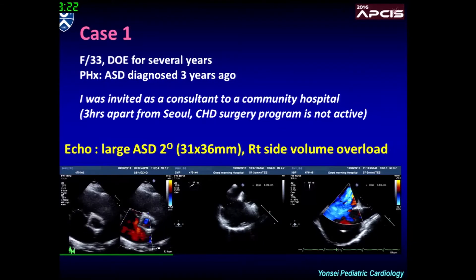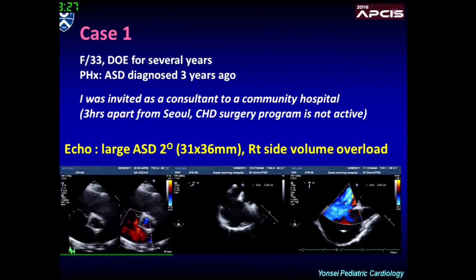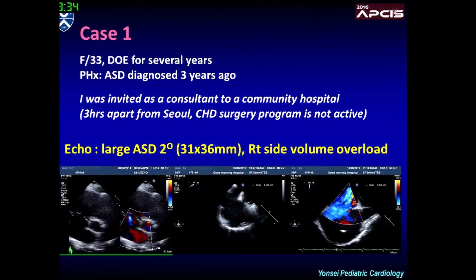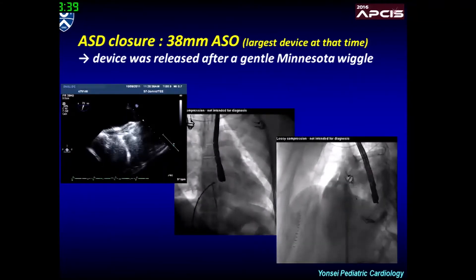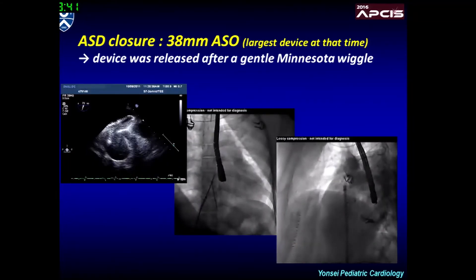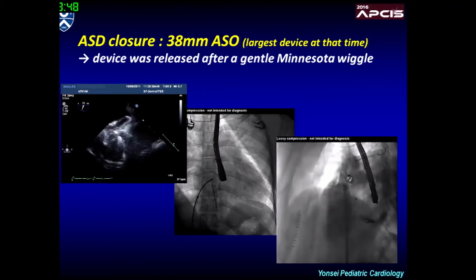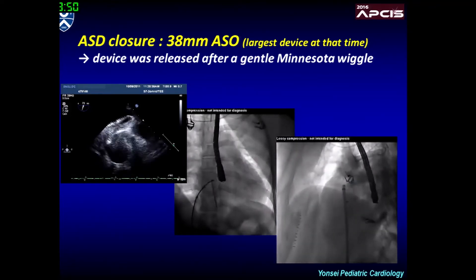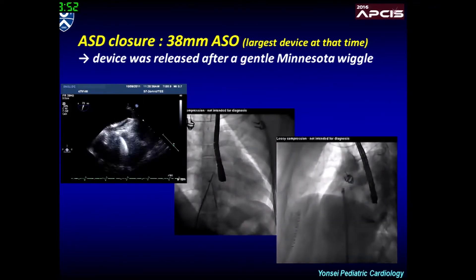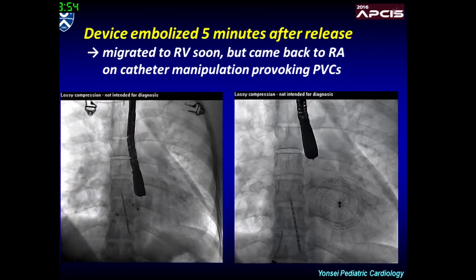I would like to introduce some case examples. The first case is a young lady with a large ASD. I was invited to perform the ASD closure procedure in a provincial hospital. Transthoracic echo showed a large defect sized up to 36 mm. The defect was closed without difficulty using a 38 mm Amplatzer septal occluder, which was the largest available device at that time. The device position was stable on Minnesota Wiggle, and they released the device.